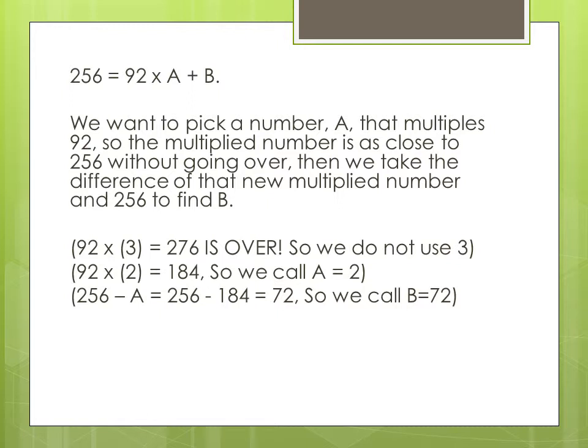Next we take this multiplied number 184 and subtract it from 256 to find b. So b will equal 72. This will give us the final form of 256 equals 92 times 2 plus 72.